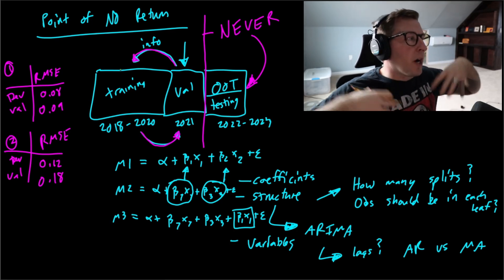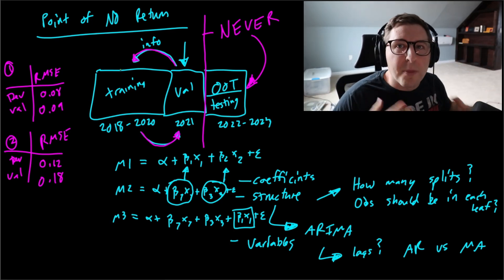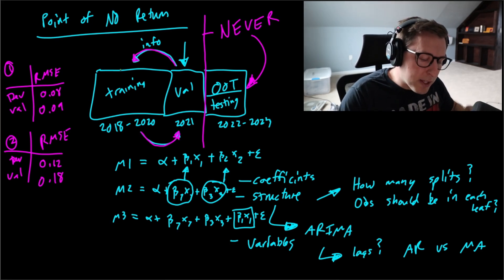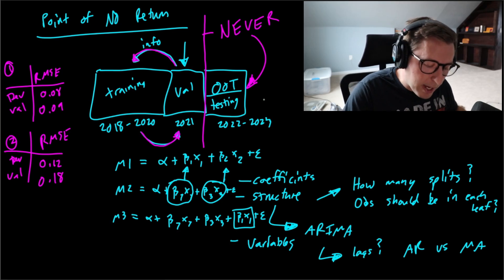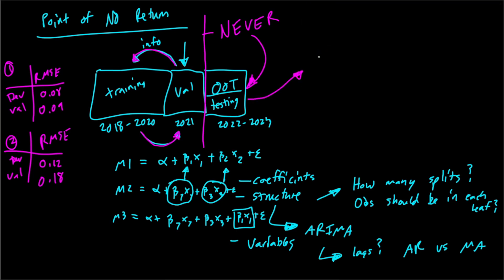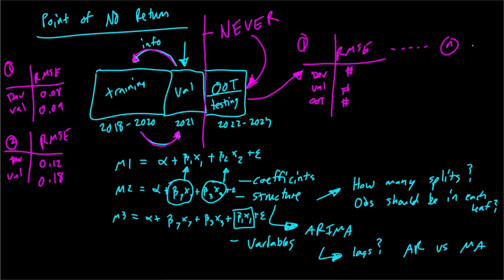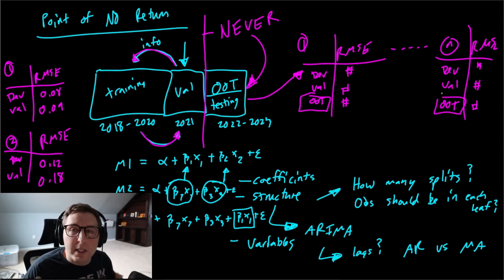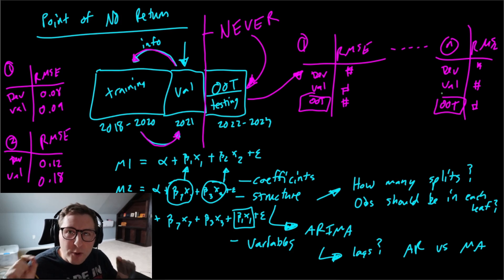Once you hit the point of no return, you take your out-of-time data and make decisions based on it. You never, ever use out-of-time data to make a decision to change anything about the model — the data, the structure, the transformations, nothing. Once you pass this point, everything should already be done. The development process — training, validation, structuring, fitting — all of that is model development. If you go back after seeing out-of-time results, you're basically lying and cheating in the world of quant.